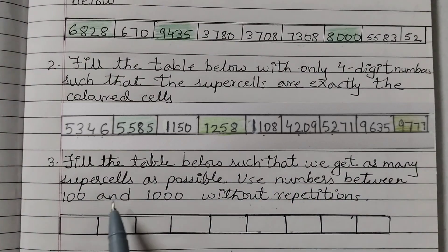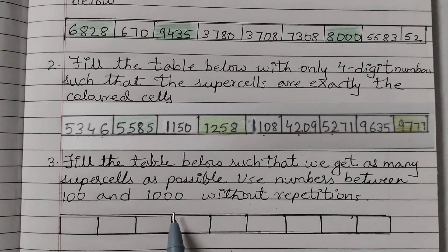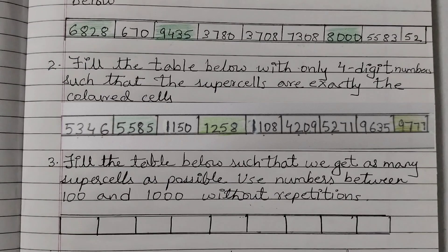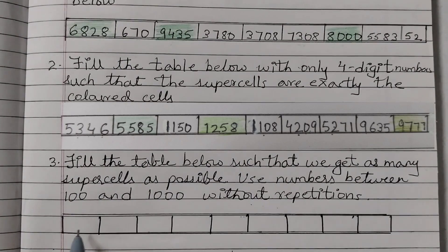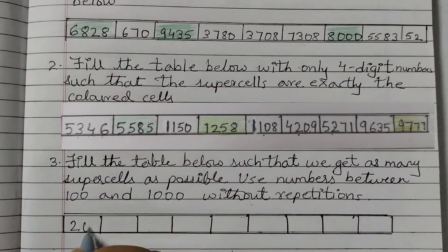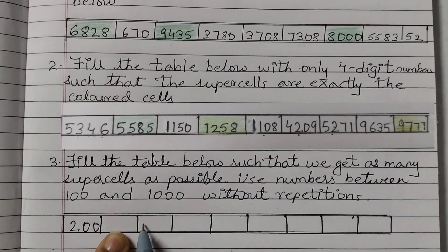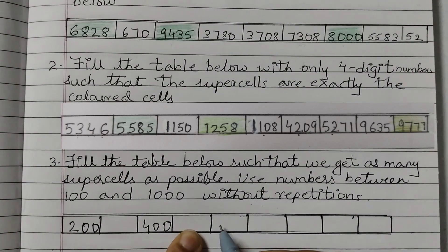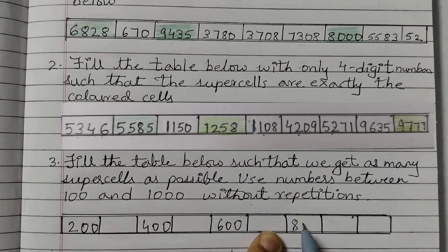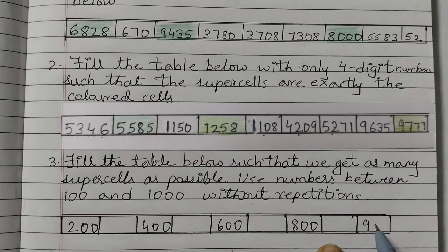Question number 3: fill the table below to get as many supercells as possible, using numbers between 100 and 1000 without repetitions. We need to fill in numbers to get the maximum number of supercells. I'll write numbers in increasing order in alternate cells: 200, then skip one, 400, skip one, 600, skip one, 800, and then 900.